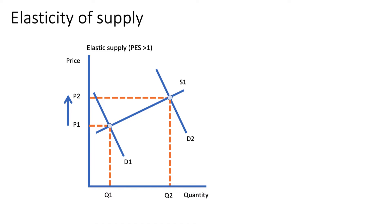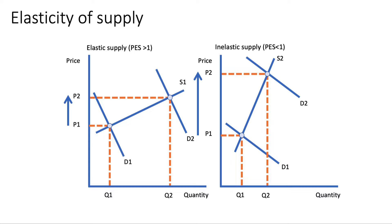Here's a diagram showing a more elastic supply — the coefficient is greater than one. Contrast that with a more inelastic supply, where the coefficient of elasticity of supply is less than one. So the question is: evaluate two factors which might influence the price elasticity of supply.